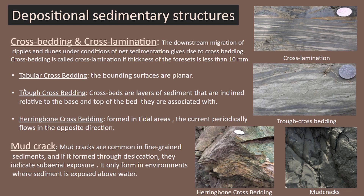In tabular cross bedding the bounding surfaces are planar. In trough cross bedding, beds are layers of sediment inclined relative to the base and top of the associated bed. Herringbone cross bedding forms in tidal areas because the current periodically flows in the opposite direction.